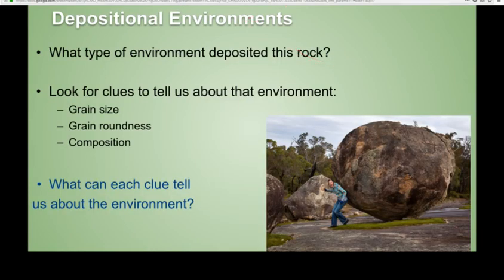What is a depositional environment? A depositional environment is the environment or scenario that deposits a sedimentary rock. You look for different clues to tell you about that environment — for example, sedimentary structures, what is in the rock, the composition, and the size and types of grains you see in the rock. All of these provide clues as to what type of environment deposited that rock.